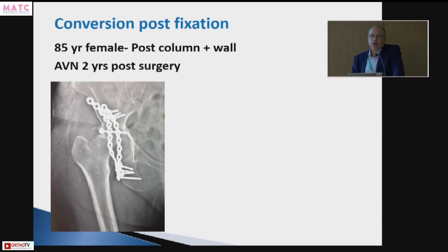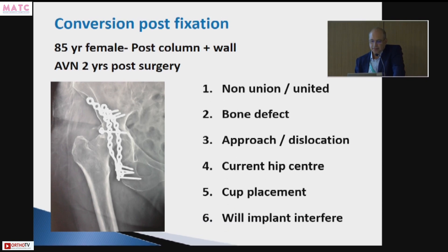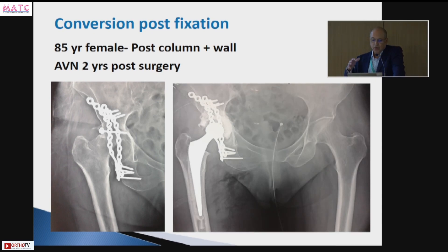Sometimes post-fixation things are not as perfect. Here, an 85-year-old female with a posterior column plate and posterior wall has developed avascular necrosis, the reduction is suboptimal, and there is a screw within the joint. You need to ask the same questions: has the fracture healed, where is the bone defect, what approach, where is the hip center? In this case, only the one intra-articular screw needed to be removed. I accepted a high hip center, which is quite reasonable in total hip replacement, and used a cemented implant because of poor bone quality.